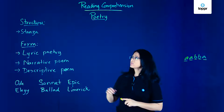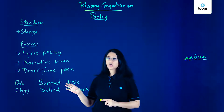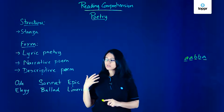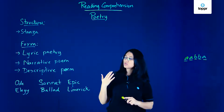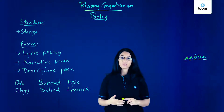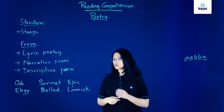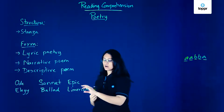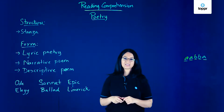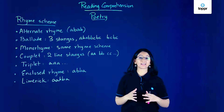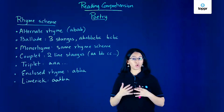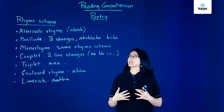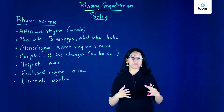So those are the different types of structures that poems can have. Next time when you read a poem, make sure you understand what form of poetry it is in case you're asked about it on a test. Now we'll take a look at the rhyme scheme.